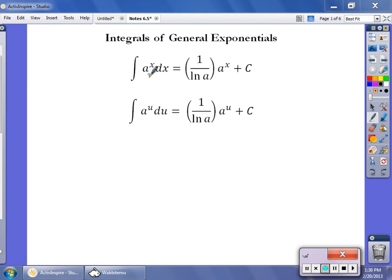It's 1 over the ln of the base times the original equation plus C, which is exactly the same thing that e was except we don't have the ln of e here because that's just 1, so we just had e to the x plus C. Obviously if you put a function u in there, then we're going to rewrite it in terms of u and du.